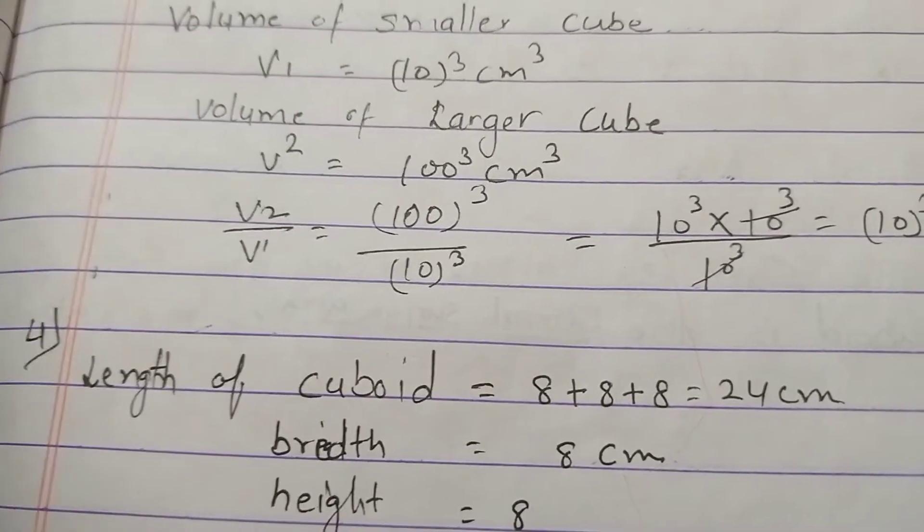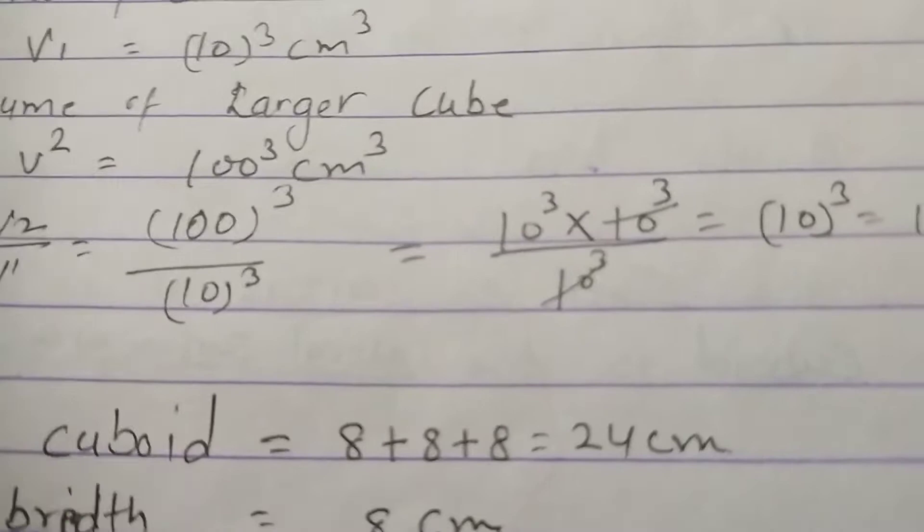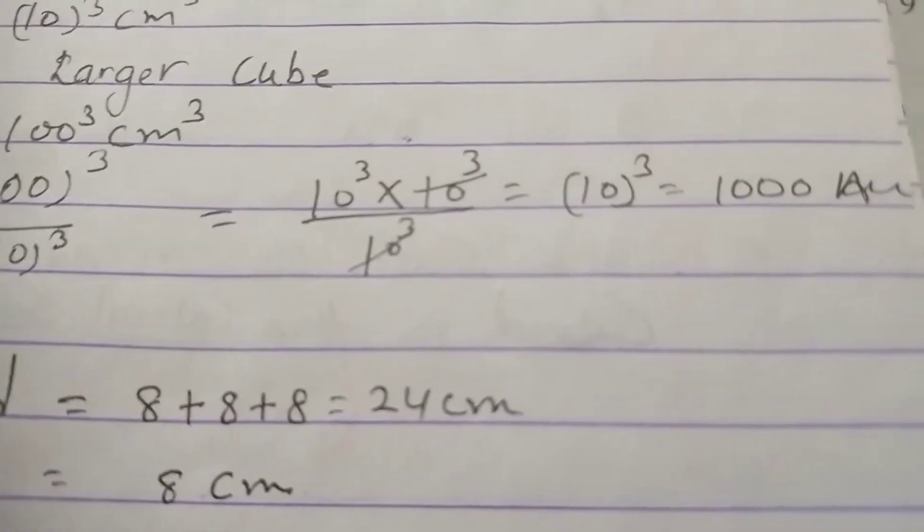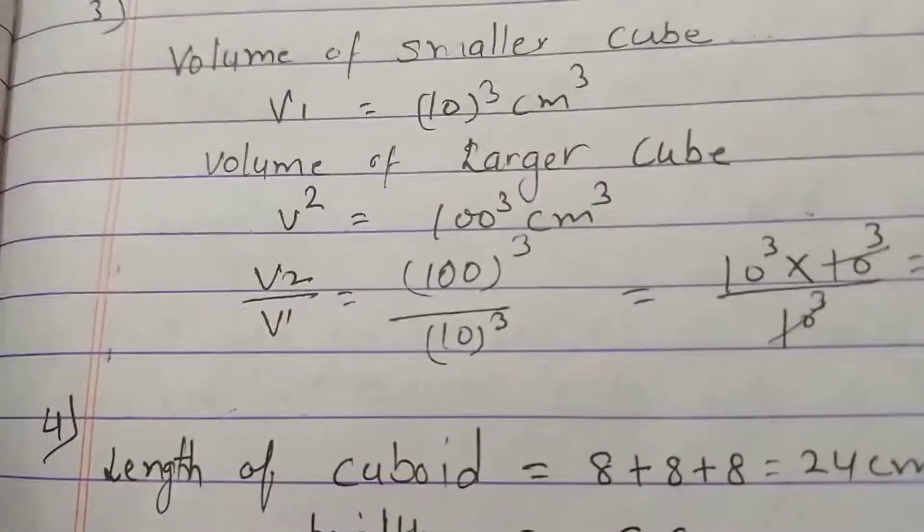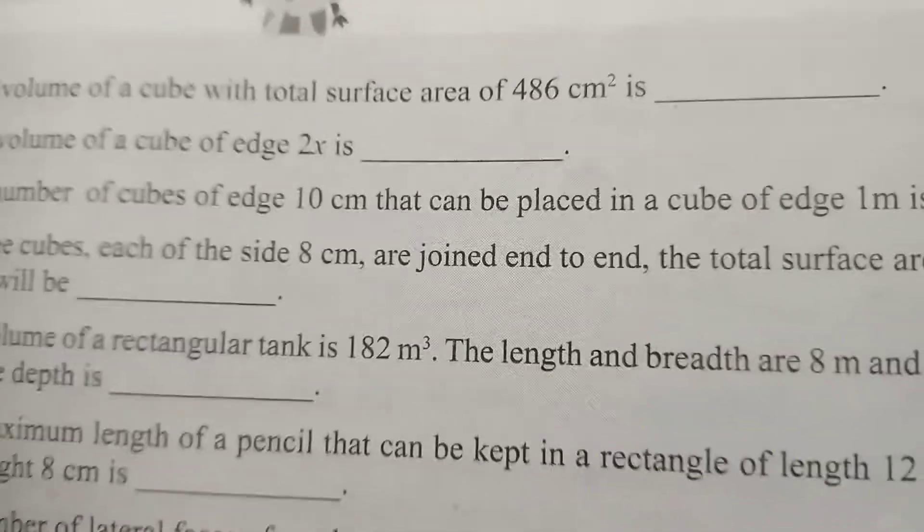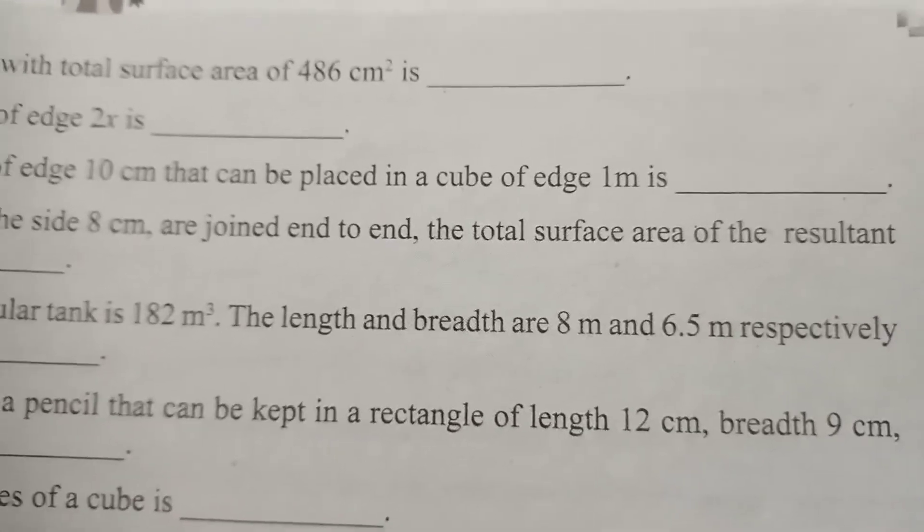Volume of larger cube is 1000. Fourth question: if three cubes each of side 8 centimeter are joined end to end, the total surface area of the resultant solid will be?